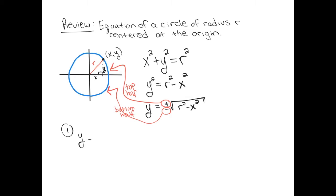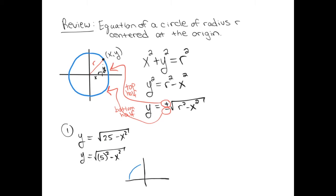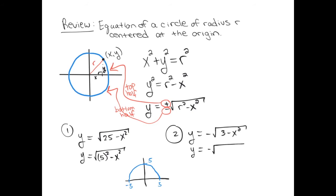Suppose I wanted to graph y equals the positive square root of 25 minus x squared. This has the format of the equation of a circle centered at the origin with radius 5, because 25 is 5 squared. So the graph of this function is the top half of a circle of radius 5. For another example, we write 3 as square root of 3 squared, so the radius is square root of 3, and that function gives the bottom half of a circle of radius square root of 3.